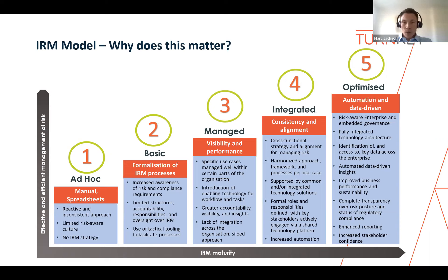You might have noticed that within the maturity model, the introduction of enabling technology doesn't come into play until level three — 'managed' — and there's a good reason for that. Certain foundations need to be in place before your organization and the end user community will be ready to embrace and adopt supporting applications. If an organization barely has formalized processes, end users don't understand the importance of managing risk, and there are no defined roles and responsibilities, adoption will be extremely low.